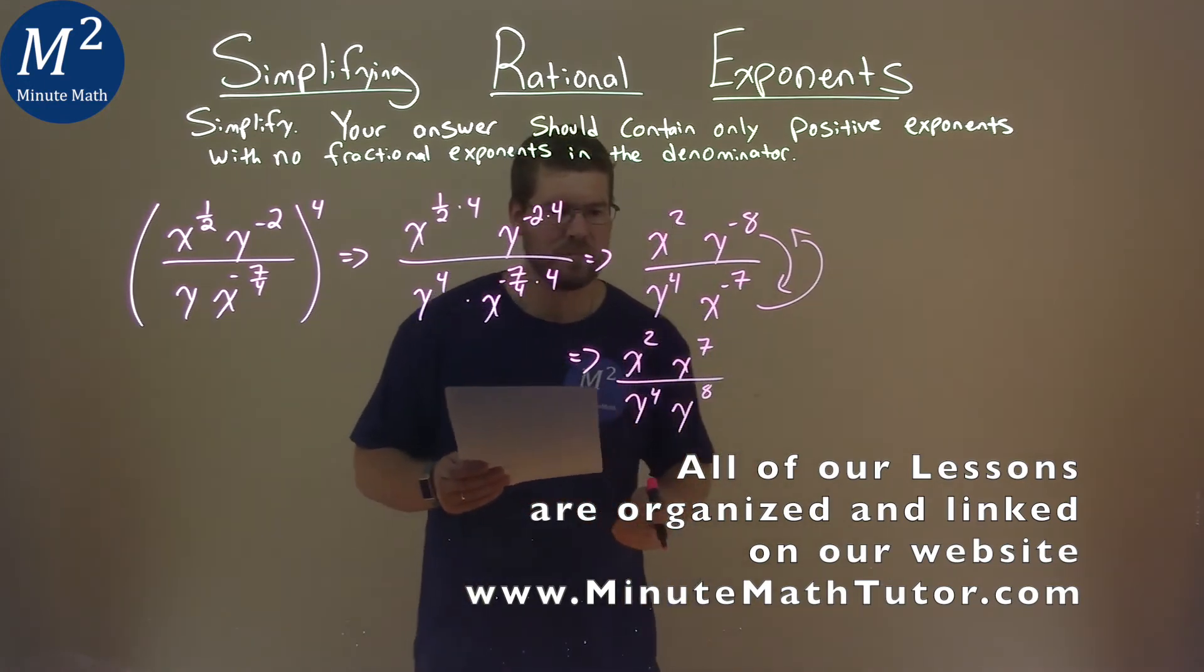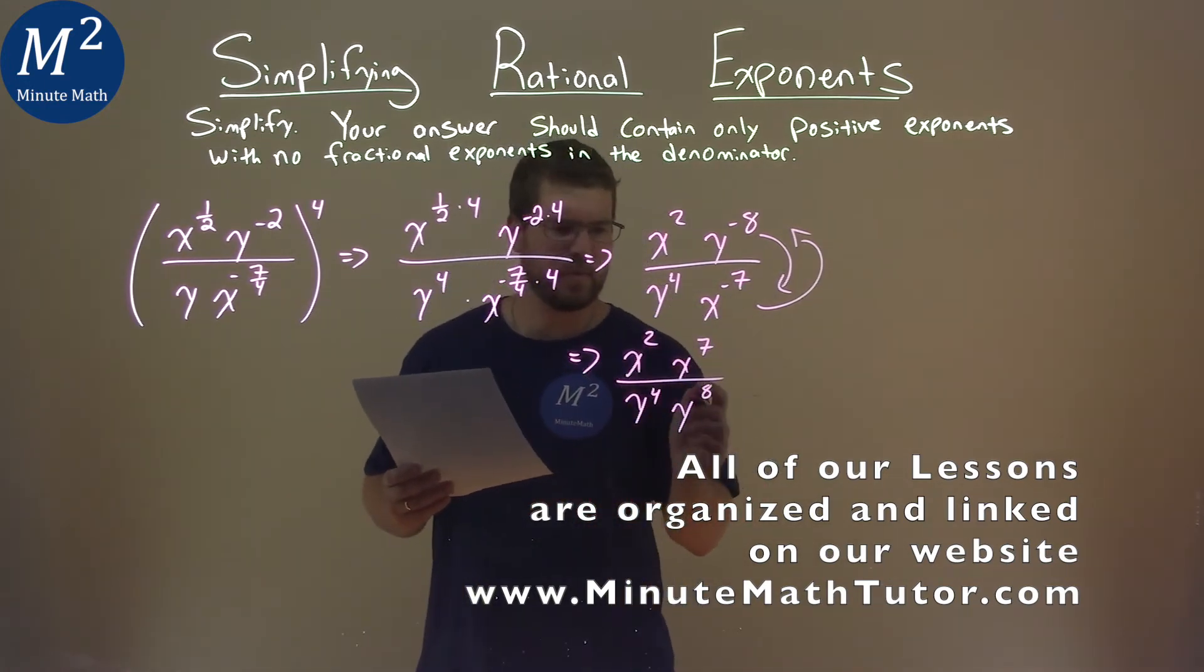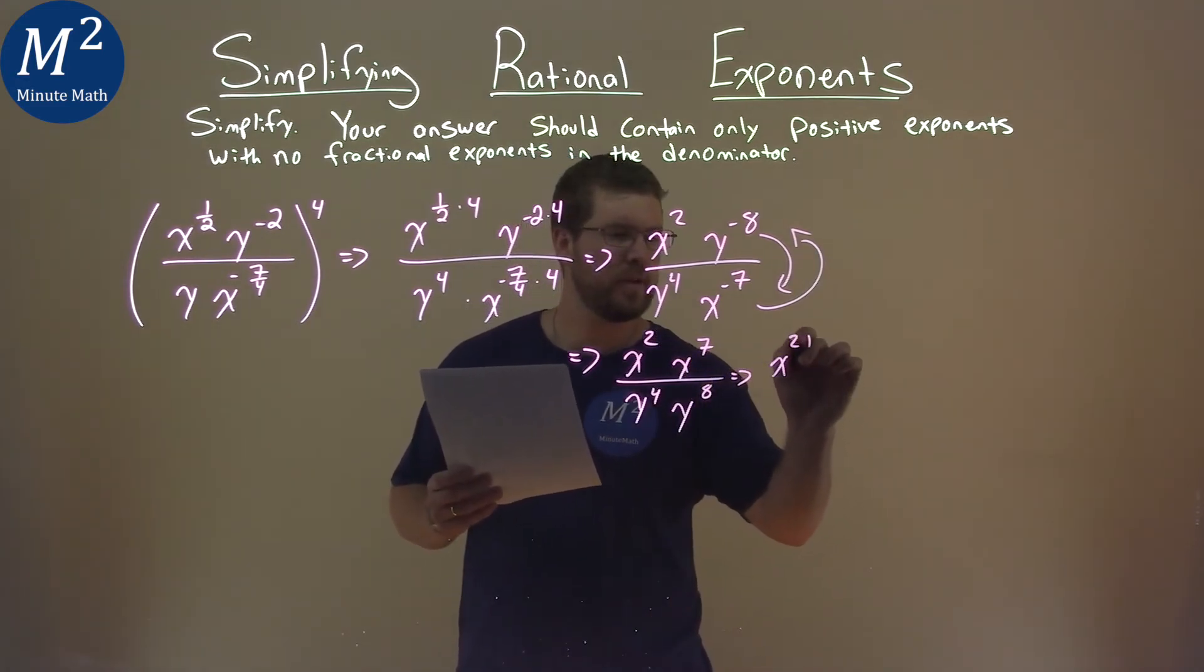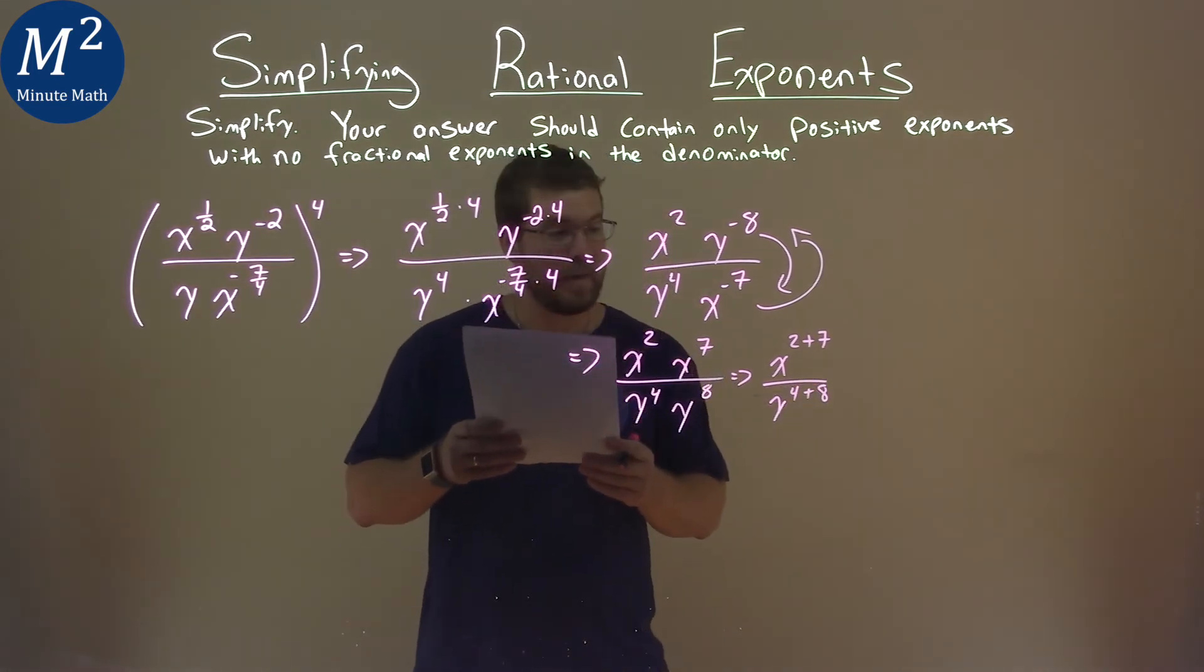Now from here, you know our rules, we add the exponents. So we have x to the 2 plus 7 here, and y to the 4 plus 8. Not too bad.